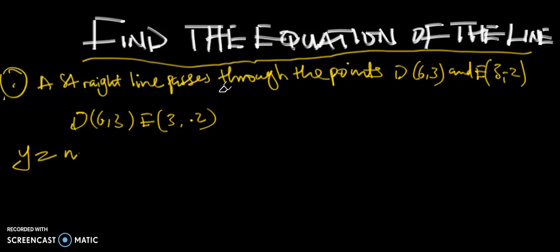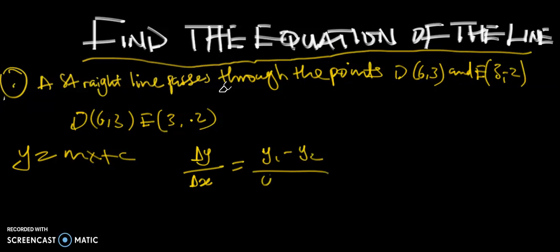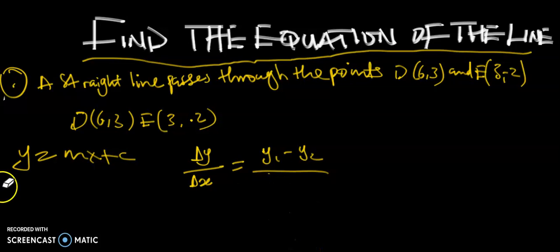We are going to use our formula y = mx + c. We also need to find the slope and the y-intercept of the line. The points show us that the y-intercepts are -2 and 3. The formula for the slope is change in y divided by change in x, which is y1 minus y2 divided by x1 minus x2.